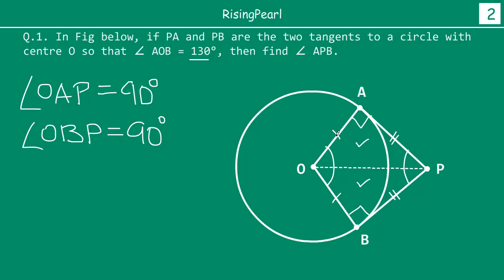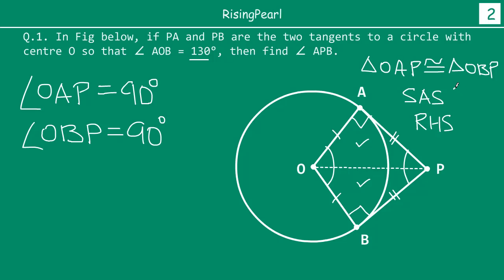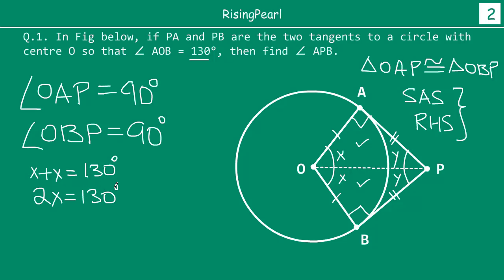So we can say that these two triangles are congruent — either by SAS or RHS congruence rule. Triangle OAP is congruent to triangle OBP. Using corresponding parts of congruent triangles, if angle AOB is split as X plus X, then X plus X equals 130 degrees, so 2X equals 130 degrees, meaning X equals 65 degrees.